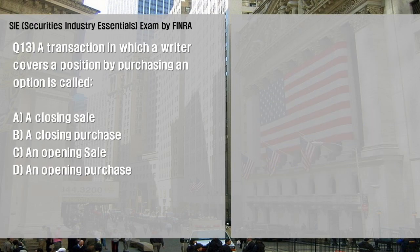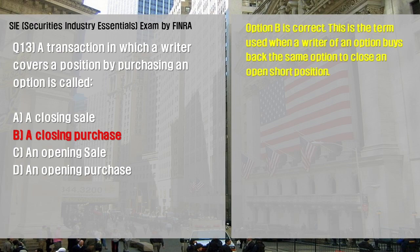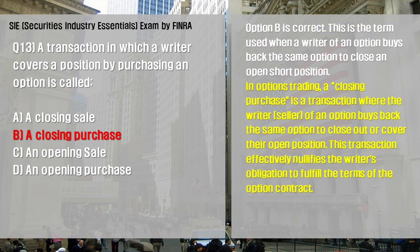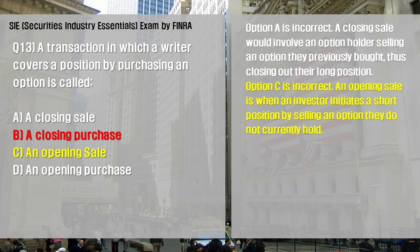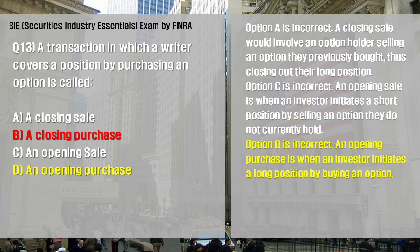A transaction in which a writer covers a position by purchasing an option is called: A: a closing sale; B: a closing purchase; C: an opening sale; D: an opening purchase. Option B is correct — this is the term used when a writer of an option buys back the same option to close an open short position. A closing purchase effectively nullifies the writer's obligation to fulfill the terms of the option contract. Option A, a closing sale, would involve an option holder selling an option they previously bought. Option C, an opening sale, is when an investor initiates a short position by selling an option they do not currently hold. Option D, an opening purchase, is when an investor initiates a long position by buying an option.